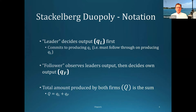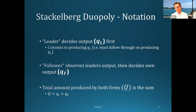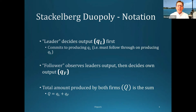The typical notation we're going to use is that we'll denote the amount a single firm produces using a lowercase q, and then the subscript tells us which firm. In the Stackelberg case, we have a leader which announces and commits to producing a certain amount first, and we'll denote that by a lowercase q with an L subscript. The follower then observes the leader and decides how much it wants to produce, denoted with a lowercase q with an F subscript.